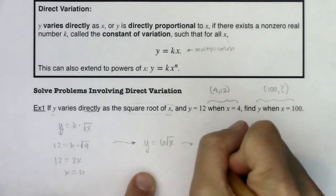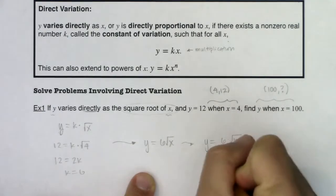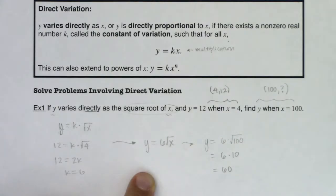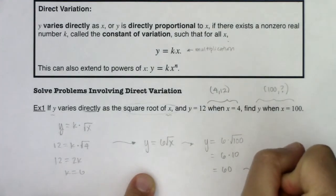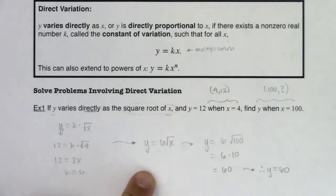And that would ultimately leave me, you can do this 6 times 10, 60. So then my end answer, if I want to finish this out is y is equal to 60. So what is the y value when x is 100? It's 60.